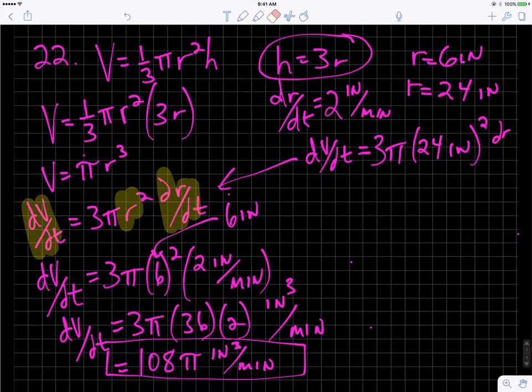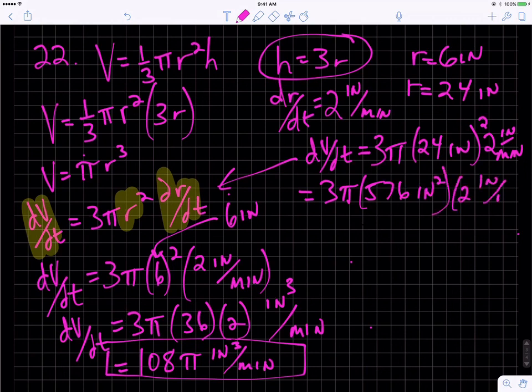Is 2 inches per minute. So then dV/dt equals 24 squared, which is 576, so 3π times 576 inches squared times 2 inches per minute.